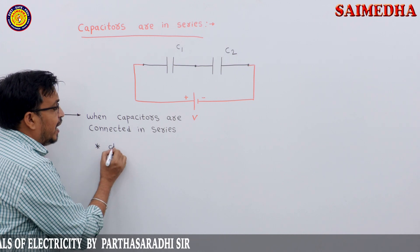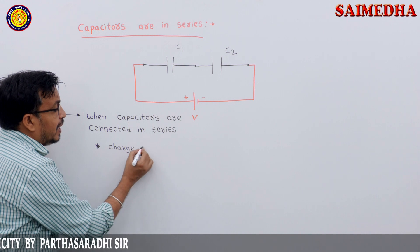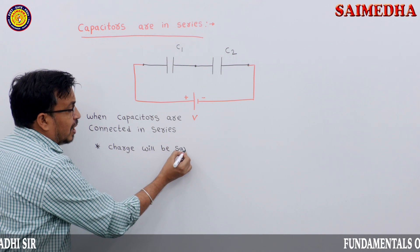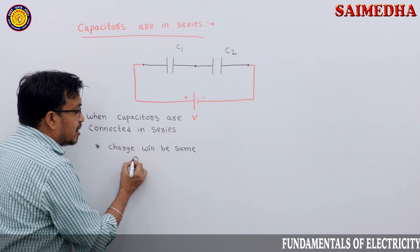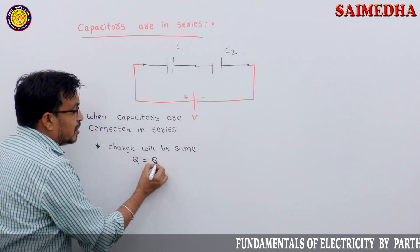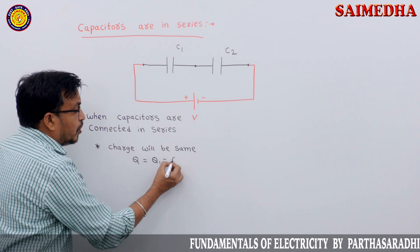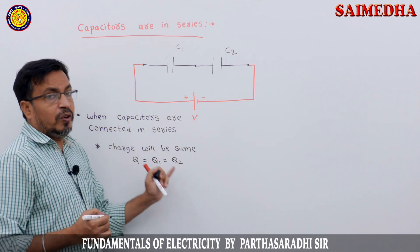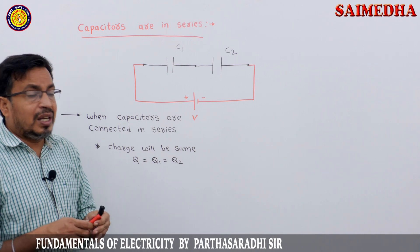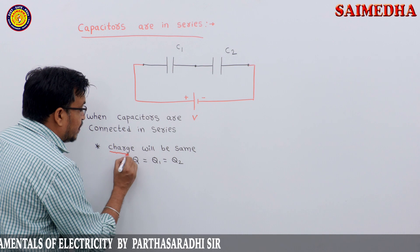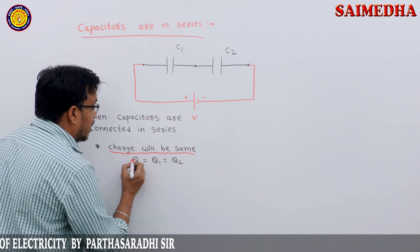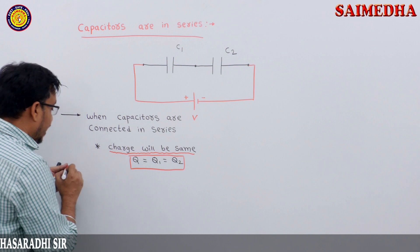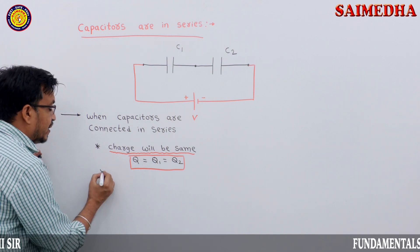When capacitors are connected in series, the charge will be the same. The total charge Q is equal to Q1 equal to Q2. This is the key formula: Q = Q1 = Q2.